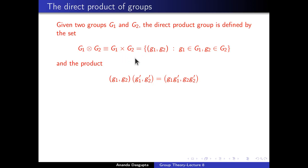Let me remind you of elementary set theory here. G1 cross G2 is a set whose elements are just pairs, where the first element g1 comes from the set G1 and the second element g2 comes from the set G2. So this is the underlying set — just pairs of elements, one from each group. Then we come to the product law or the multiplication law for the direct product group, and that is simplicity itself.